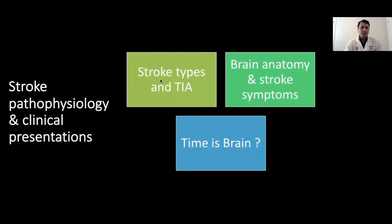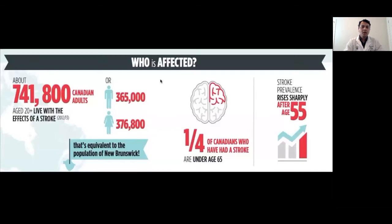I have divided my topic into three parts. In the first part, I will discuss the different types of stroke, including what is meant by TIA, or transient ischemic attack. In the second part, I'm going to talk about the brain anatomy, including cerebrovascular circulation and clinical symptoms of stroke. And in the third part, I will talk about the time is brain concept.